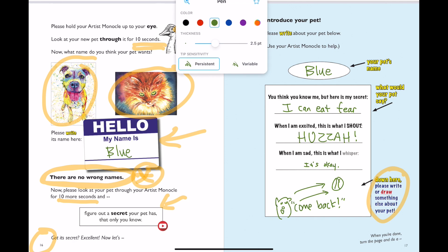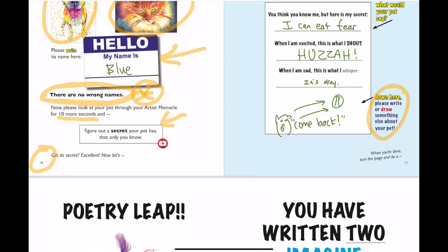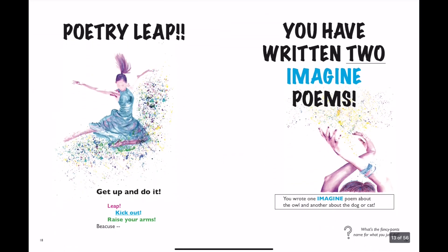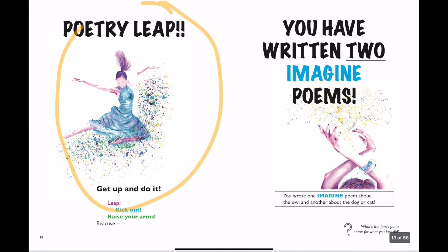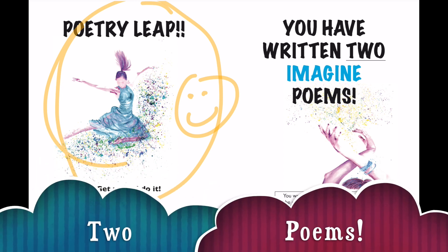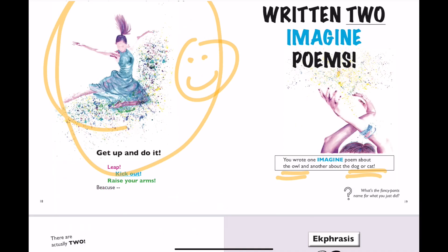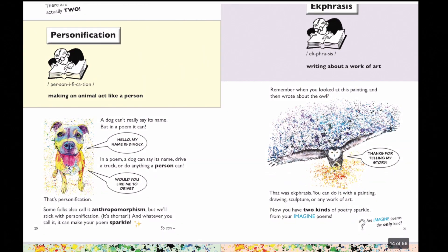Once you've done this, turn the page and do a poetry leap — get up, kick it, do it, raise your arms! Poetry leap! Because you've written two imagine poems so far — two poems! One about that owl (mine was called Bingley) and one about either the dog or cat (I did the dog and named him Blue).